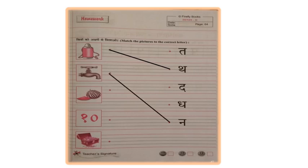Now, tell me what can you see under Nal? Which picture is this? This is Tarbuj. And Tarbuj begins with which letter?